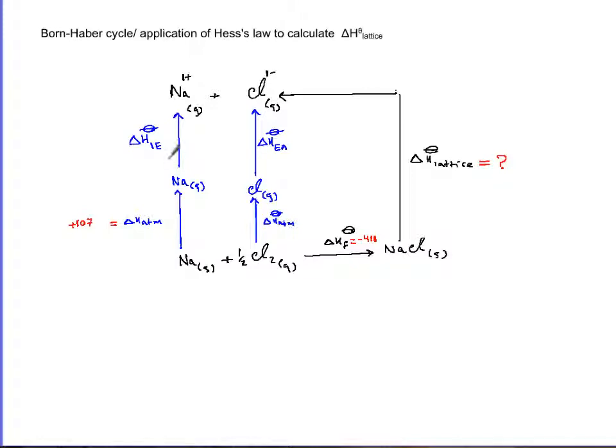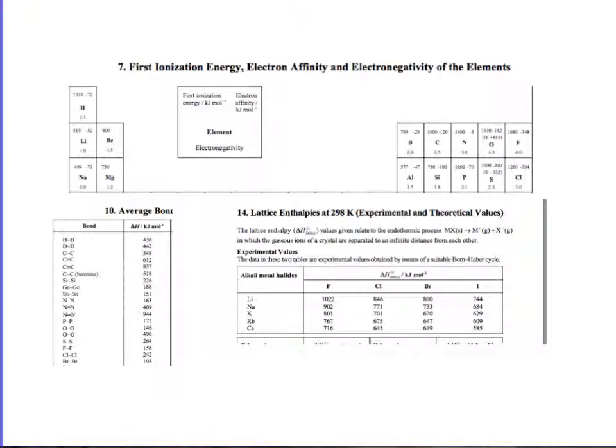Now the other information you have and you should be able to find. Let's see where we can find it. Delta H ionization of sodium and electron affinity of chlorine you can find in table 7. So if you go to table 7 of your booklet, read the legend carefully first. Ionization on the upper left, electron affinity on upper right. So I go after my sodium and I see 494.